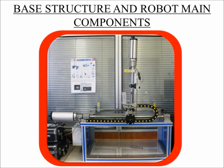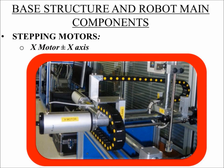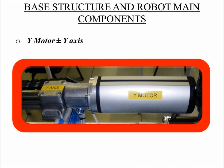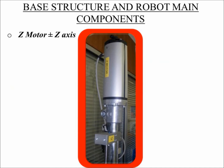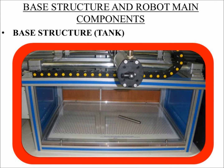I'm going to describe the base structure and the robot main components. Stepping motors: X motor having positive and negative X axis, Y motor having positive and negative Y axis, Z motor having positive and negative Z axis. Base structure — the base structure is where the Cartesian robot is supported on.